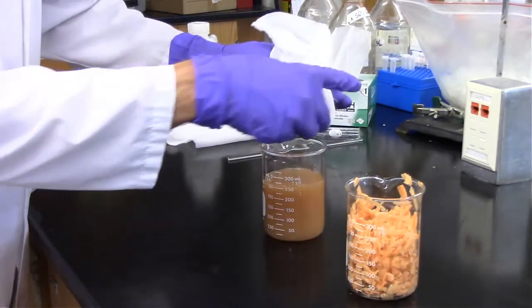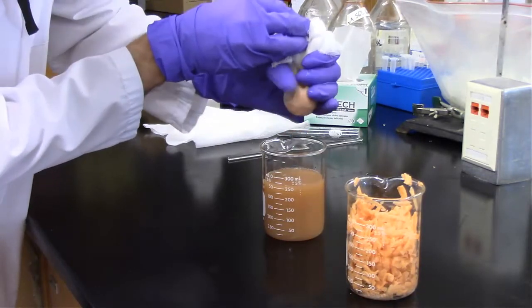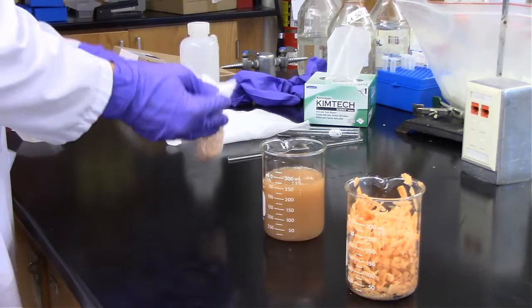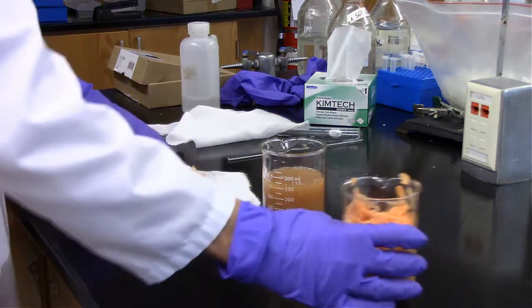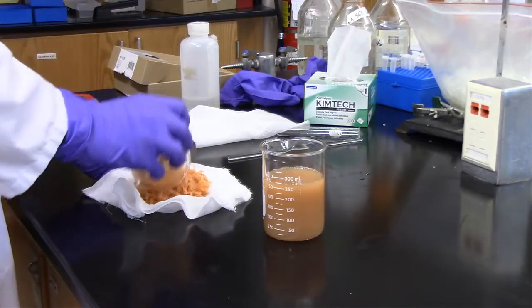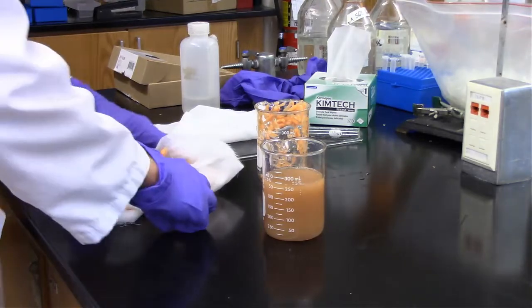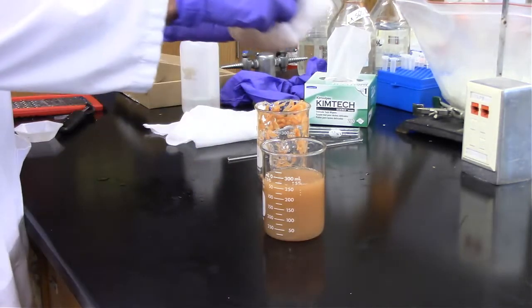We're filtering it through that cheesecloth again. We're going to squeeze a little bit out to maximize the amount of starch that comes through. And then we'll put the rest in the cheesecloth, or at least a little bit more, and squeeze that through. And again, looking back, I probably shouldn't have put that on the table. You can probably see some liquid leaking through there.